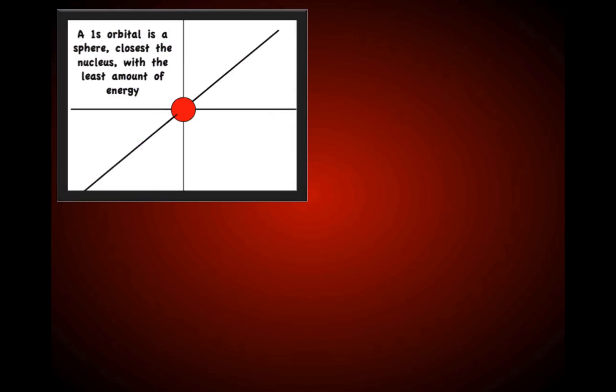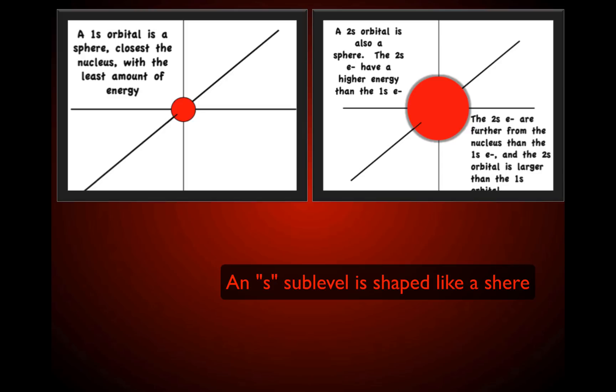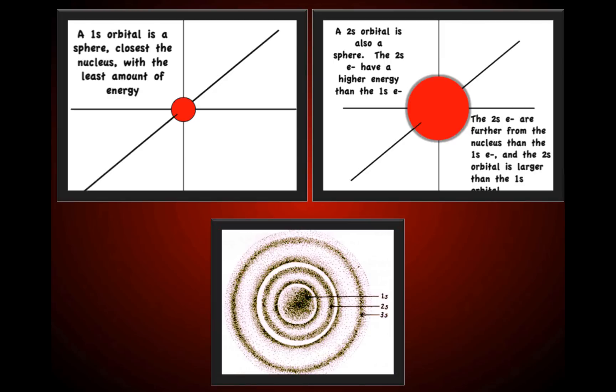A 1S orbital is a sphere — it's closest to the nucleus with the least amount of energy. A 2S orbital is also a sphere, but the 2S electrons have higher energy, are further from the nucleus, and the 2S orbital is larger than the 1S orbital. In the next picture we see a 1S, a 2S, and a 3S orbital. All S sublevels are spherical in shape.